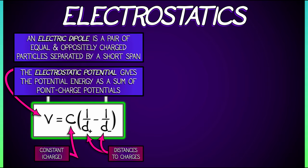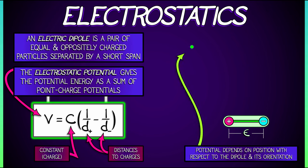So let's illustrate it this way. We have a pair of charges, one positive, one negative. They are separated by a short distance. Let's call that epsilon. Then the potential V depends on the position with respect to the dipole and its orientation. So I pick some point out in space that has a distance D plus to the positive charge, D minus to the negative charge. And this formula gives you what the electrostatic potential is.